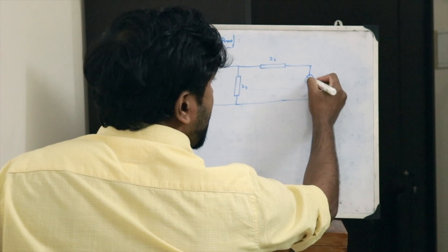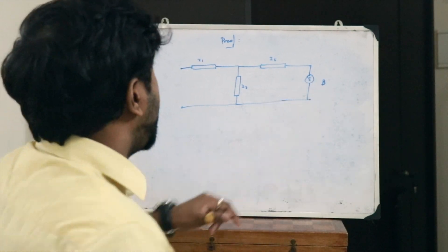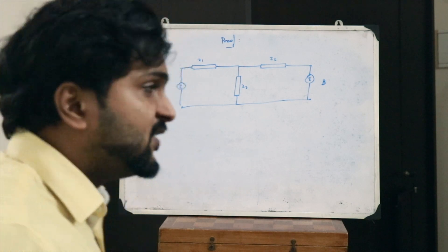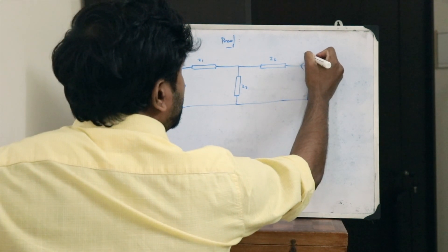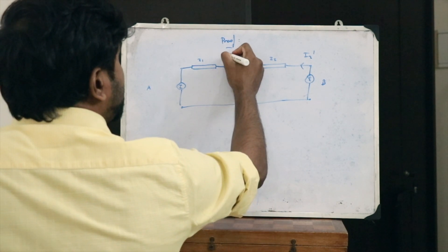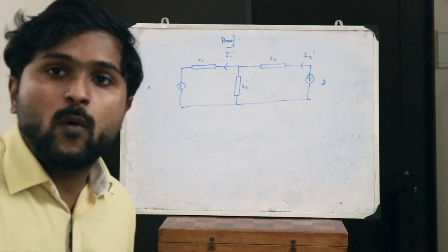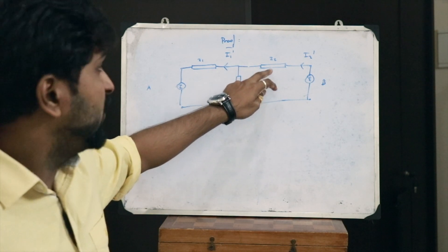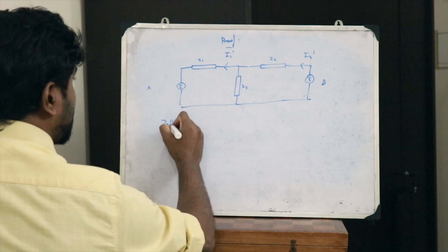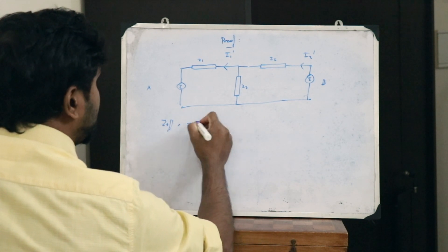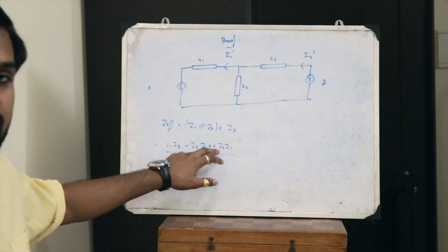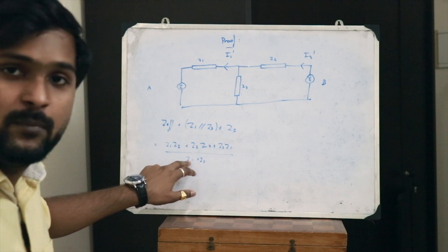Now let us consider the second case, when the same EMF is applied at the terminals of antenna B and current is measured at the terminals of antenna A. Let the current here be I2 dash and the current at antenna A be I1 dash. The effective impedance is now Z1 parallel to Z3 in series with Z2, which equals (Z1·Z2 + Z2·Z3 + Z3·Z1) / (Z1 + Z3).